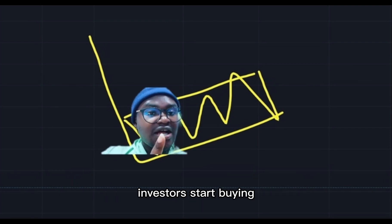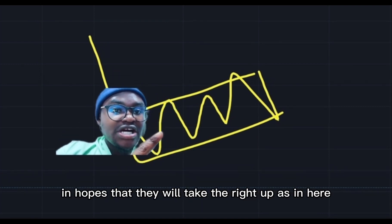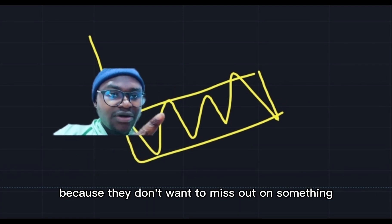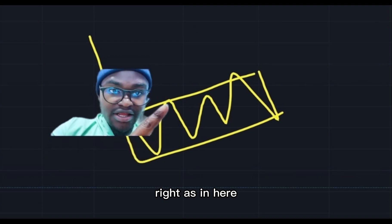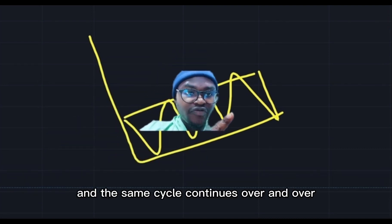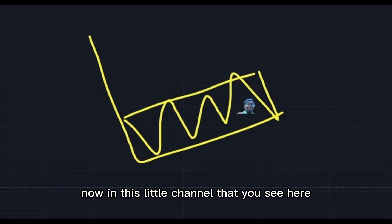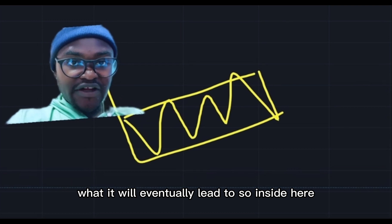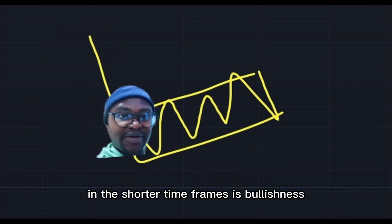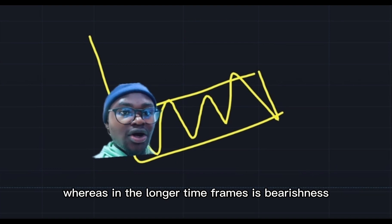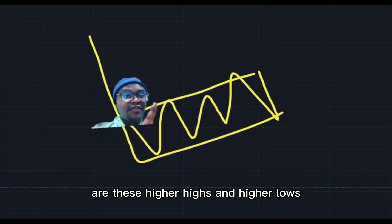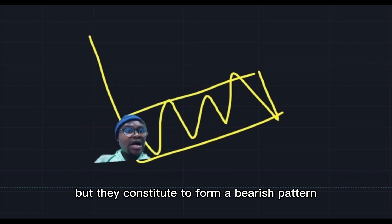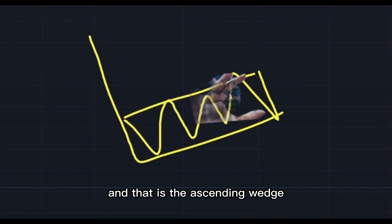When the price reaches here, investors start buying in hopes that they will take the ride up. This can be described as buying the dip, or perhaps FOMO, because they don't want to miss out on something that could potentially be the same ride as before. The same cycle continues over and over. In this little channel, in the shorter timeframes there is bullishness, whereas in the longer timeframes there is bearishness.